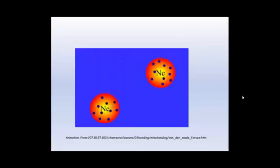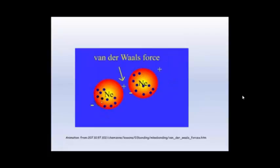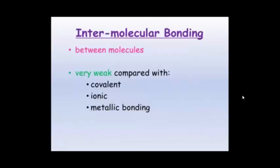You'll see when they do attract, all the electrons are on this side of this neon and they're all on this side of this neon, creating a slight negative on this side and a slight positive on this side.